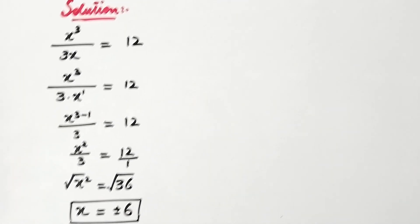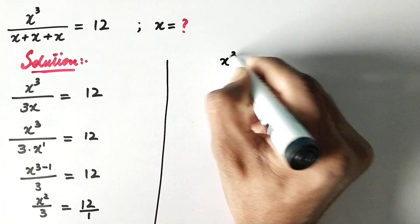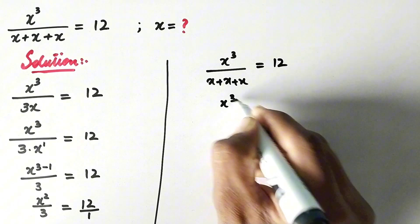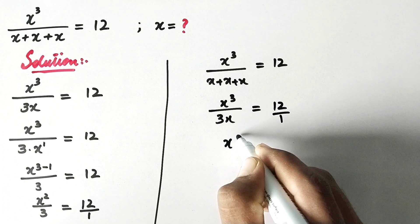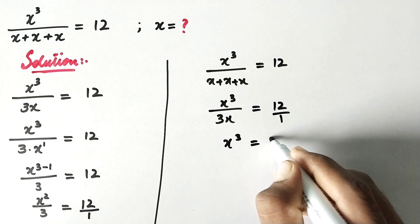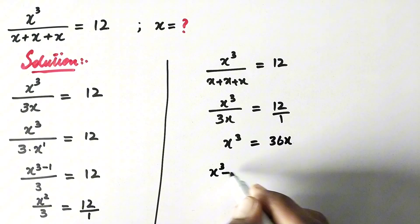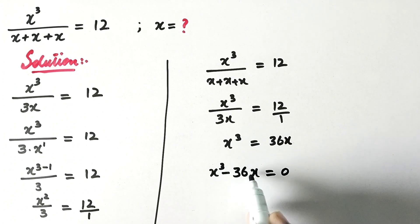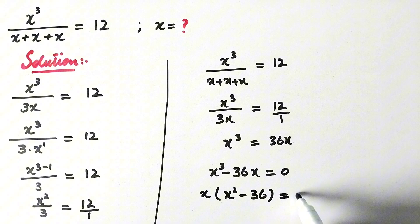Or we can solve it another way. Here we will write x cubed over x plus x plus x is equal to 12, which gives x cubed over 3x is equal to 12. By cross multiplying, x cubed is equal to 12 times 3 times x, which gives x cubed equals 36x. Taking 36x to the left-hand side, x cubed minus 36x is equal to 0.